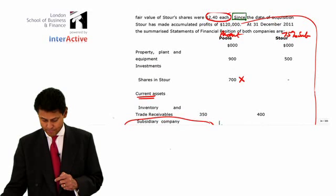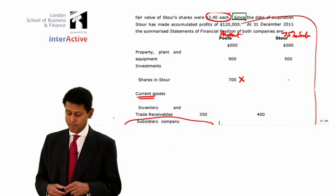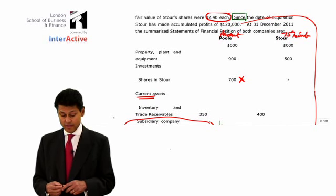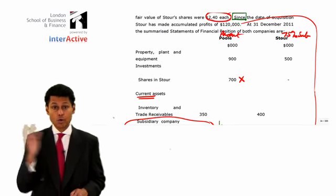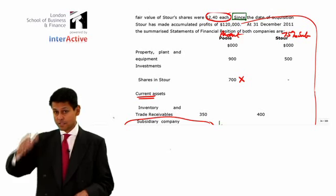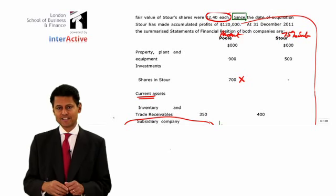plant and equipment near the top. Property, plant, equipment, 900 and 500. So, how much of the 500 do I bring in? Do I bring in 75% or all of it? And the answer is all of it, because obviously you can control all of it.